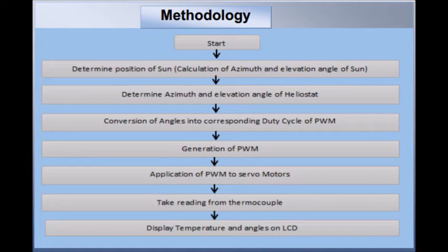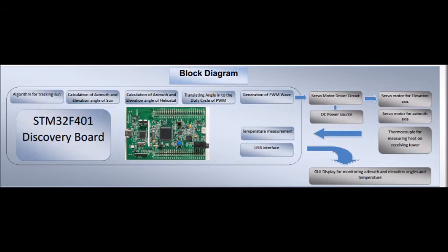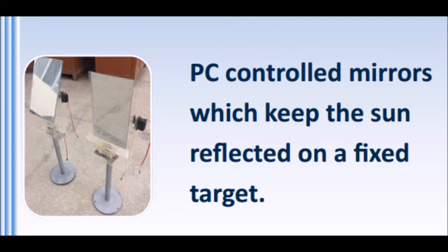Now that we have the azimuth and elevation angle of the Heliostat, we drive the azimuth servo motor and elevation servo motor to those angles. Since servo motors operate on PWM waves, we convert the calculated azimuth and elevation angle of the Heliostat into the corresponding PWM wave. This PWM wave is then supplied to the motors from the controller through optocouplers.